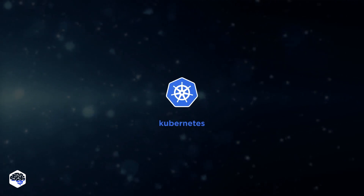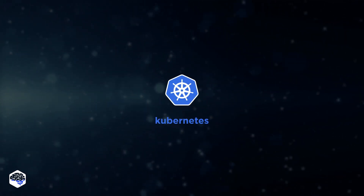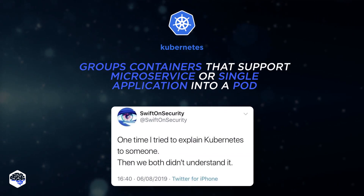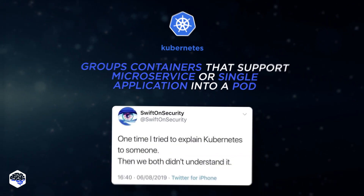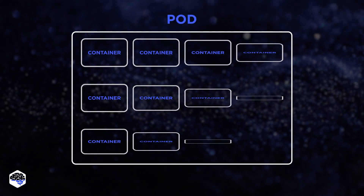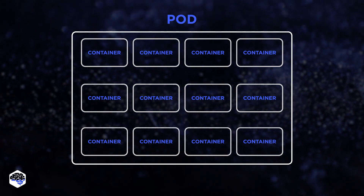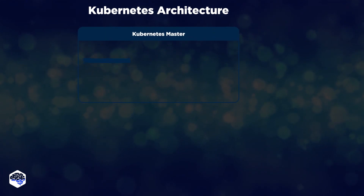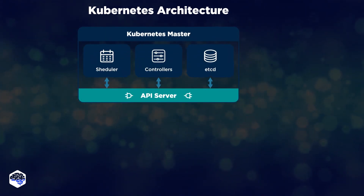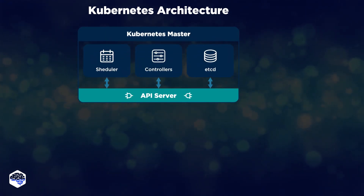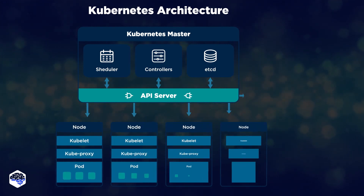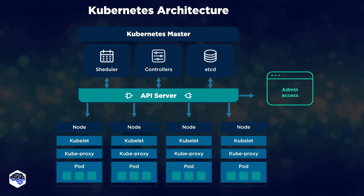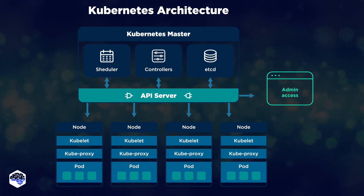Time to move on to Kubernetes. It's a powerful tool that groups containers that support microservice or single application into a pod. The apps running in Kubernetes act like a single unit, although they may consist of some containers paired loosely. Pods, containers, and services are hosted within a cluster of one or many computers. Kubernetes runs over a number of computers or nodes — the collection of nodes is known as a Kubernetes cluster.